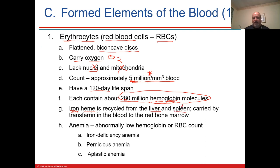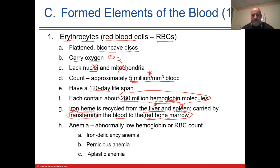The liver and spleen are where red blood cells go to be remade. The iron is carried by a protein called transferrin, and it has to go to the red bone marrow to make blood cells. The red bone marrow is where all blood cells are made. The construction of red blood cells is called erythropoiesis, and the production of all blood cells is called hematopoiesis.